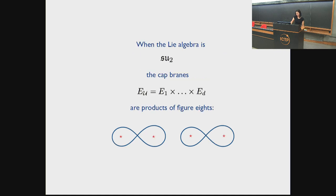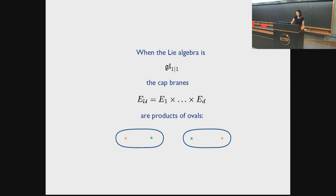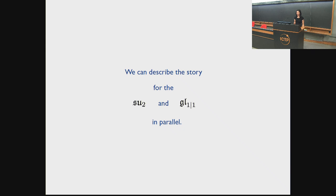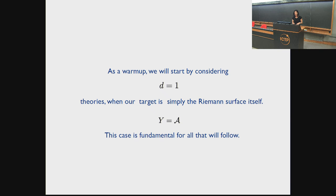The link homologies start out as cohomologies of the Floer differential acting on the vector space spanned by the intersection points. What we want to do is describe these braided figure-eight brains in terms of the generators. You can describe the story in parallel for both theories. As a warmup, we'll start with the D=1 case when the target is based on the single copy of the Riemann surface in both cases — that's fundamental to everything that follows. If you have two one-dimensional Lagrangians that intersect over a point, you get a new one-dimensional Lagrangian by taking their connected sum over the intersection point. From this pair of branes intersecting, you get a new Lagrangian.